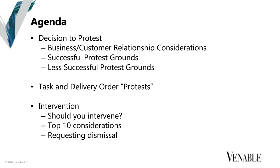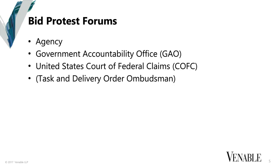With regard to forum selection, there are three forums that a company can go to in order to protest an award: the agency, the Government Accountability Office, and the United States Court of Federal Claims. Many agencies also have a task and delivery order ombudsman, but it doesn't really have the formalized procedures that the agency, the GAO, and the Court of Federal Claims do. Those positions seem to be more just for optics rather than actually exercising any authority and trying to address concerns of disappointed offerors.